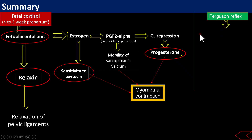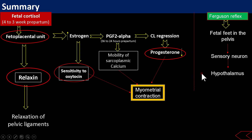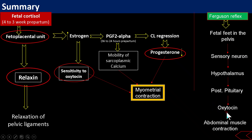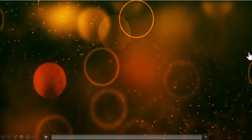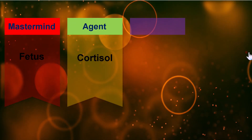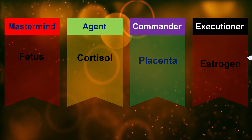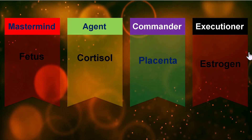The Ferguson reflex is related to oxytocin release. When the fetal head reaches the pelvis due to uterine contractions, sensory neurons are stimulated and carry information to the hypothalamus, signaling that the fetus is on the way and a very strong contraction is needed. The hypothalamus synthesizes oxytocin, transported to the posterior pituitary, which then acts on abdominal muscles and the uterus, causing strong contractions and expulsion of the fetus. In summary: the mastermind is the fetus, the agent is cortisol, the commander is the placenta, and the executioner is estrogen.